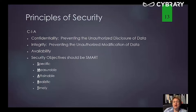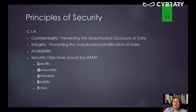Last but not least, we want availability — timely access to resources. So what we want to do from a governance perspective is to be able to outline goals in relation to CIA, and then ultimately the objectives that will help us attain those goals.